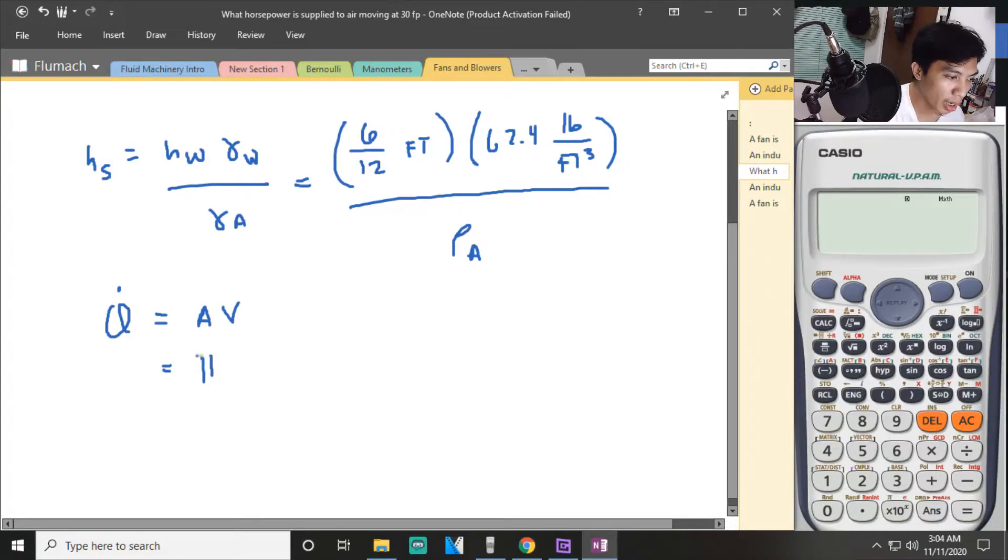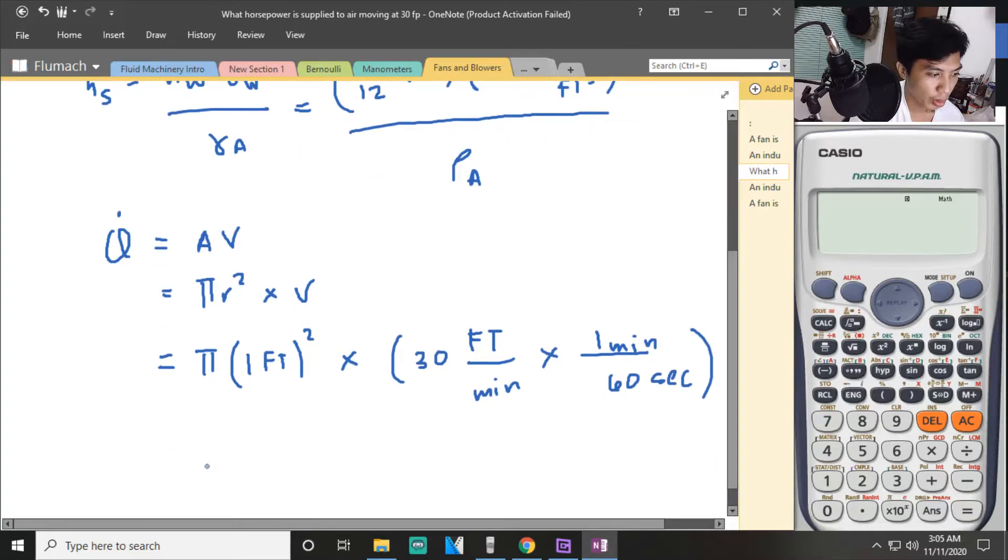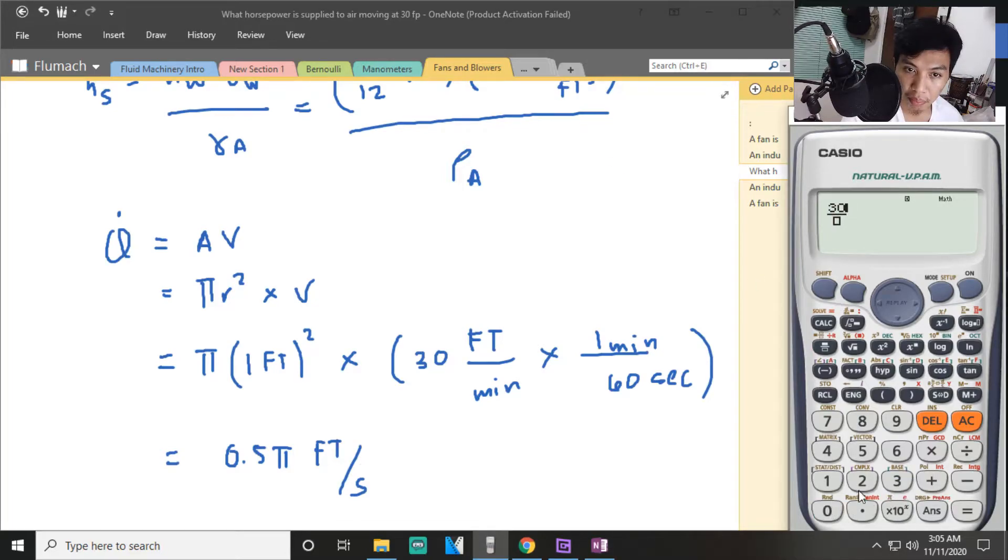Area is pi r squared times velocity. Pi, the r is 1 foot, 1 squared, times the velocity that is 30 feet per minute. Multiply by the conversion unit of minute, 1 minute every 60 seconds. So Q will be pi times 30 divided by 60. So this is 0.5 pi feet per second.